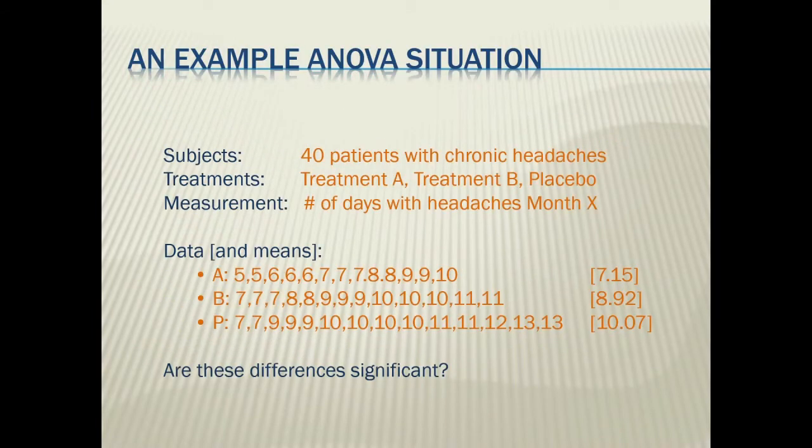Here's a little example of maybe an ANOVA situation. Let's say we had 40 patients with chronic headaches and we wanted to give some of them treatment A, some of them treatment B, and some of them a placebo. And then after they did their treatment for a certain period of time or certain regimen, we would look at the number of days with headaches for a certain month. As you can see, each participant is recorded the number of days that they had their headaches. And there's an average number of days for each group. And what we're questioning or what we're trying to answer is whether or not these differences are significantly different or if they're just due to chance. And this is why we would want to do an ANOVA.